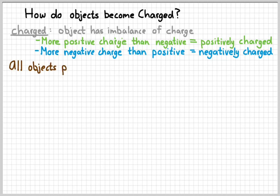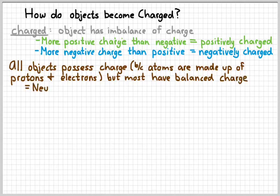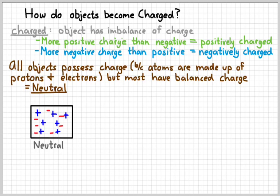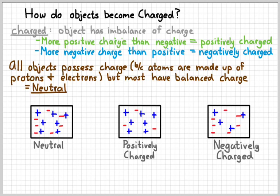And the thing we have to realize is that all objects, including you, possess charge. And we know this because everything is made up of atoms. I can't think of anything that's not made up of an atom. And atoms are made up of protons and electrons. Most objects, however, are overall electrically neutral, meaning they have the same number of positive charges as negative charges. So here's a picture of something that's neutral. If we count the charges, you'll see there's the same number of positive and negatives. This is something that's positively charged. You can tell there's more positive charges in that object than negatives. And this is something that's negatively charged. It's got more negatives than it does positive.